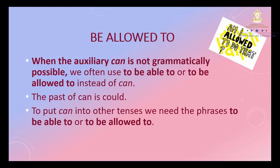To put 'can' into other tenses, we need the phrases 'to be able to' or 'to be allowed to'. Cuando el auxiliar can no es gramaticalmente posible, a menudo usamos 'to be able to' or 'to be allowed to' en lugar de can. El pasado del verbo modal can is could. Para poner can en otros tiempos, necesitamos las frases 'to be able to' or 'to be allowed to'.